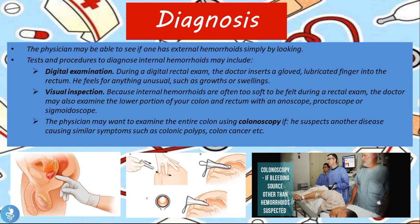Regarding diagnosis: the physician may be able to see external hemorrhoids simply by looking. Tests and procedures to diagnose internal hemorrhoids may include a digital rectal exam, where the doctor inserts a gloved lubricated finger into the rectum and feels for anything unusual such as growths or swellings. Because internal hemorrhoids are often too soft to be felt, the doctor may also examine the lower portion of the colon and rectum with an anoscope, proctoscope, or sigmoidoscope.